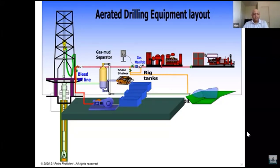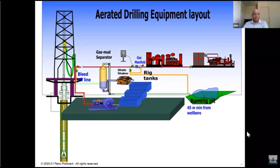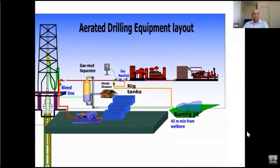The gas is vented out through a gas line to what is called a burning pit. This pit has to be at least 45 meters away from the wellbore. This is the aerated drilling equipment layout, which is quite commonly used in the Middle East.